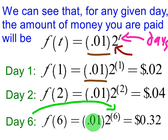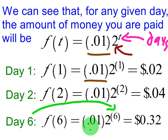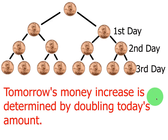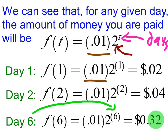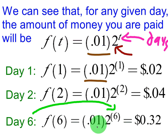Let's hop ahead in time. Instead of figuring out every day, we can figure out day six by plugging six into the exponent. This means taking the penny and multiplying by two six times — doubling it six times — so on day six we would have 32 cents. It's important to have a formula so we don't have to figure out all the days in between. For 30 days, we just plug 30 into the exponent, meaning we'd be doubling a penny 30 times.